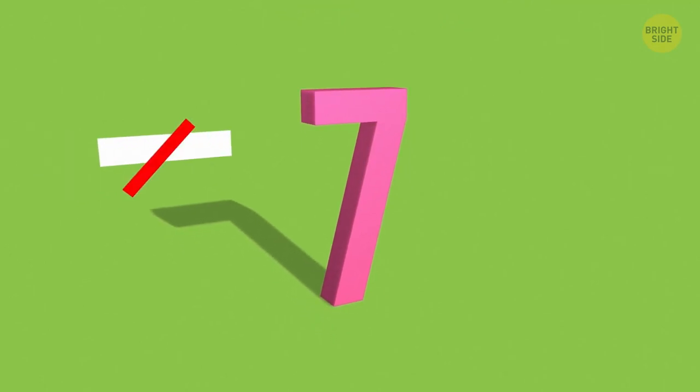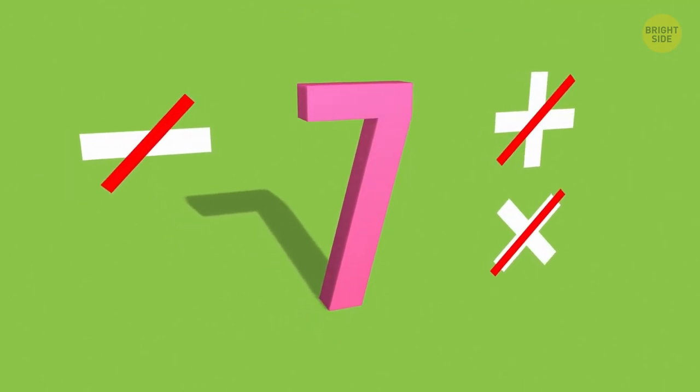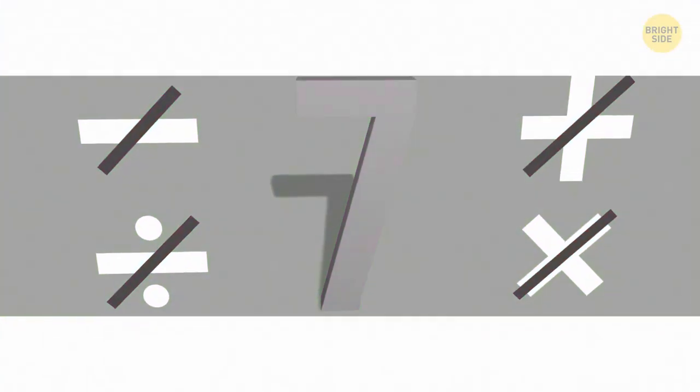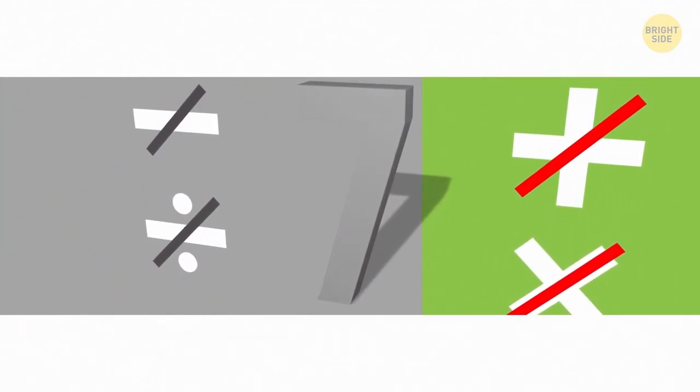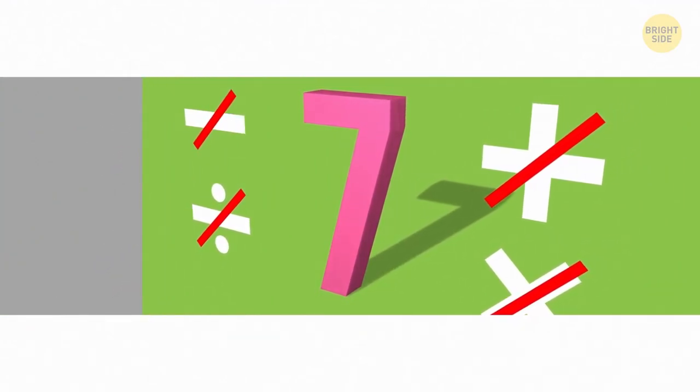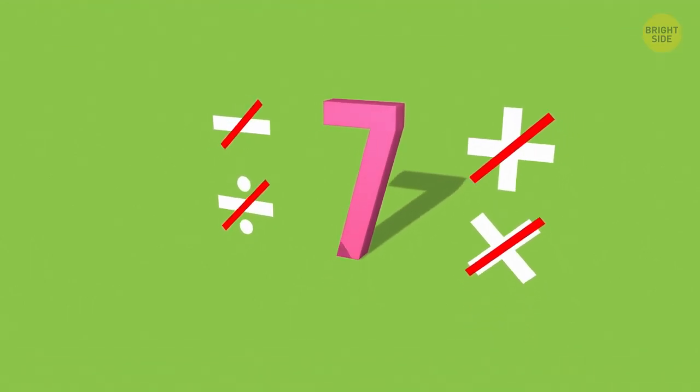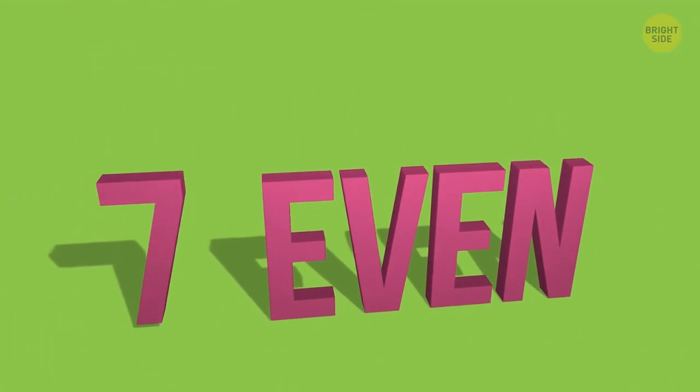1. How can you make odd number 7 even without subtraction, addition, multiplication, or division? Just drop the letter S at the beginning.